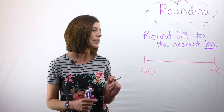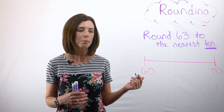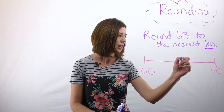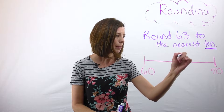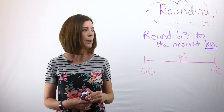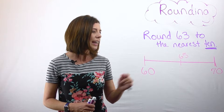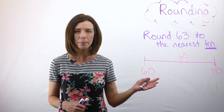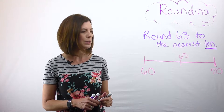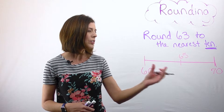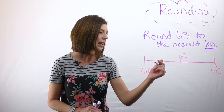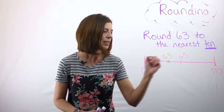Now since this is a number line, let's put what's in the very middle. Between 60 and 70 would be 65, so I'm going to go ahead and mark that just like that — that's the halfway point. Now I've been given the number 63, and I need to see which side it would be on. I'm just sort of estimating at this point, so I know that 63 is going to go on the left side here.